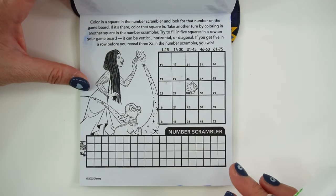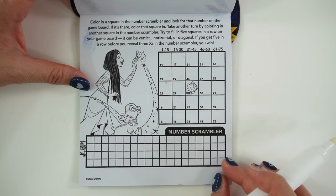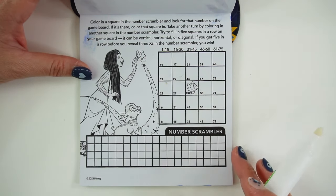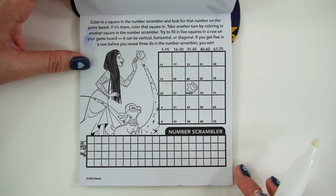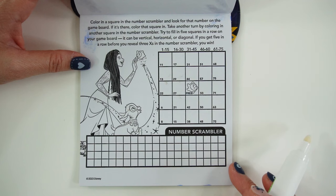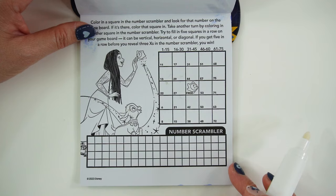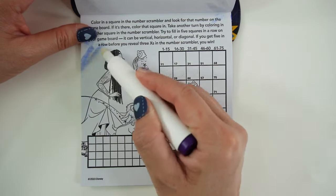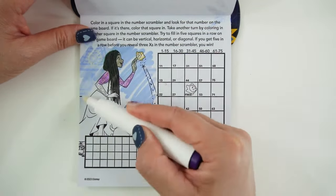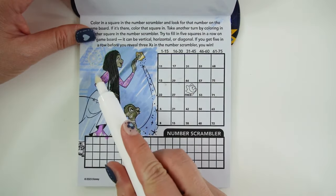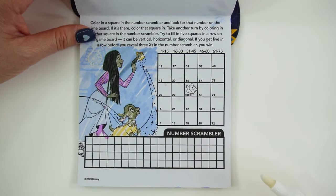Okay, it says, color in a square in the number scrambler and look for that number on the game board. If it's there, color that square in. Take another turn by coloring in another square in the number scrambler. Try to fill in five squares in a row on your game board. It can be vertical, horizontal, or diagonal. If you get five in a row before you reveal three x's in the number scrambler, you win. Let's start first by coloring her in. Here's her wish and what a colorful picture.